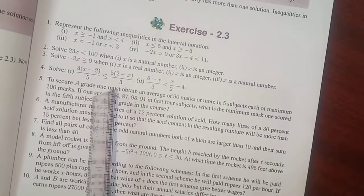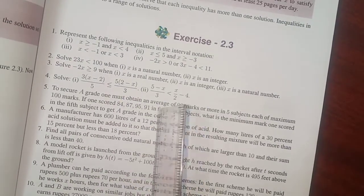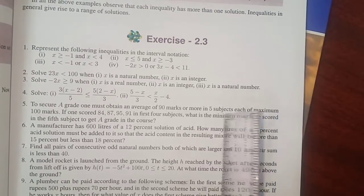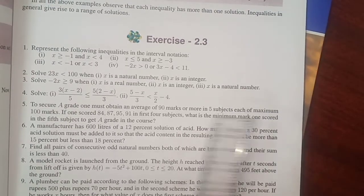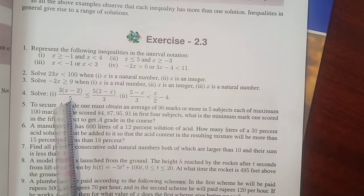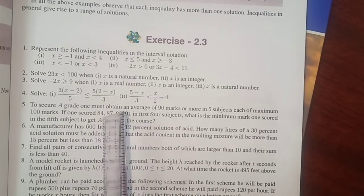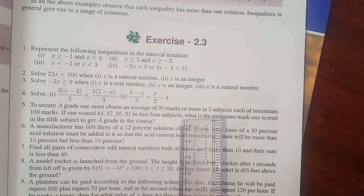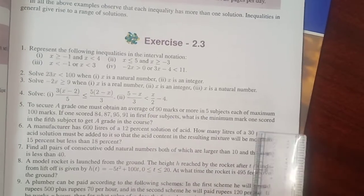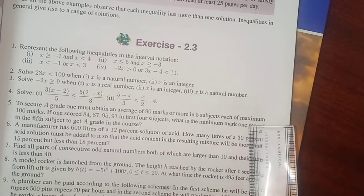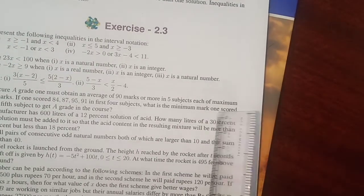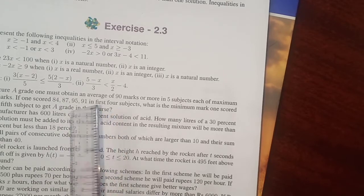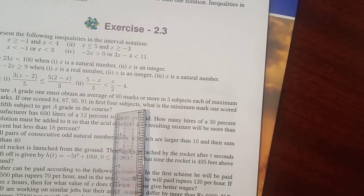To score a grade, one must obtain an average of 90 marks or more in 5 subjects, each of maximum 100 marks. If one scored 84, 87, 95, 91 in first 4 subjects, what is the minimum mark one scored in the 5th subject to get a grade in the course?